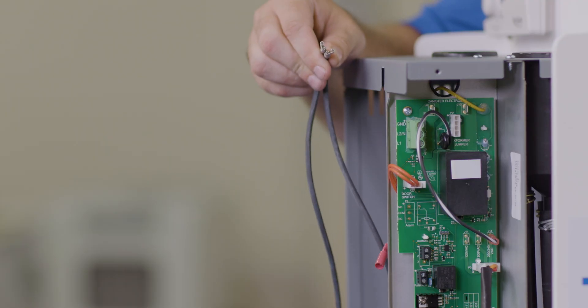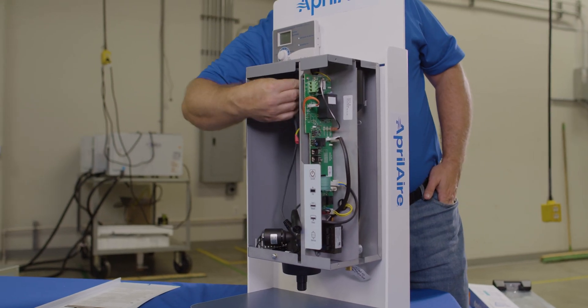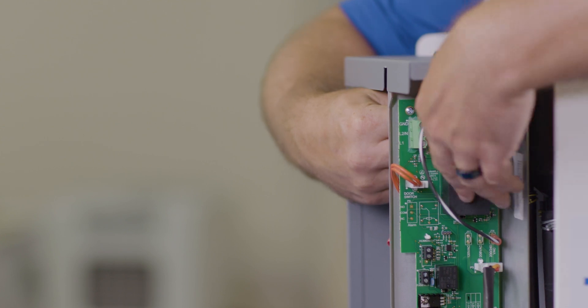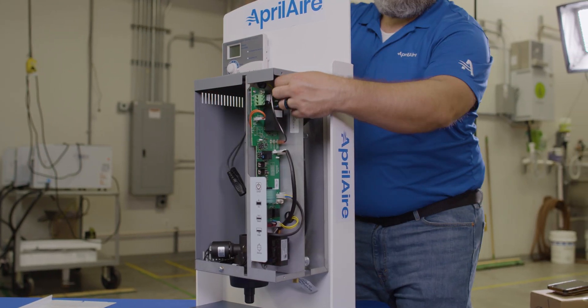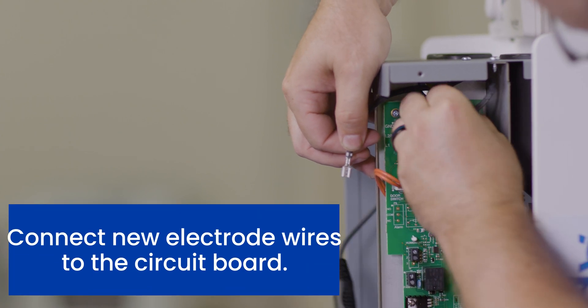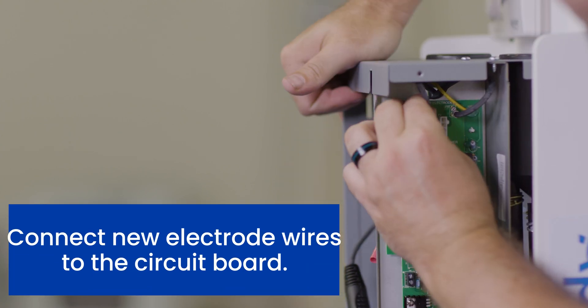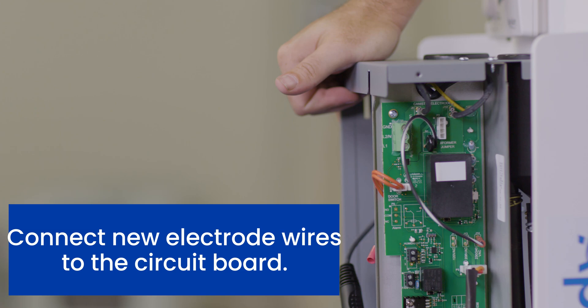Feed the electrode wires through the opening between the steam chamber and the electrical panel and connect them to the terminals on the PCB. Ensure that the quick connect terminals are pushed down thoroughly. They should be snug and not easily removed. Solid contact is required for the best performance.